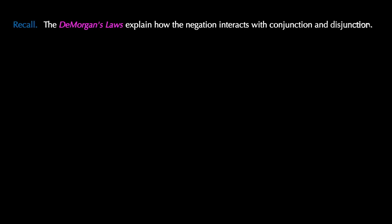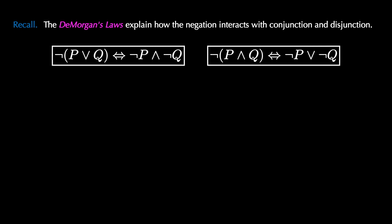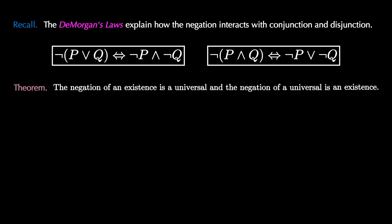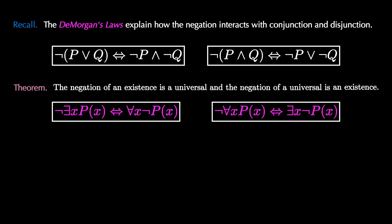Our last topic of interest for this video is how negation interacts with the two primary quantifiers. Recall that De Morgan's laws explain how negation interacts with conjunction and disjunction: 'not (P or Q)' is equivalent to 'not P and not Q,' and 'not (P and Q)' is equivalent to 'not P or not Q.' Because the two quantifiers are a lot like infinite 'or' and infinite 'and,' there's a nice relation with negation: the negation of an existential is a universal, and the negation of a universal is an existential. Specifically, 'not there exists x P(x)' is equivalent to 'for all x not P(x),' and 'not for all x P(x)' is equivalent to 'there exists x not P(x).' These are called the quantifier negation laws.